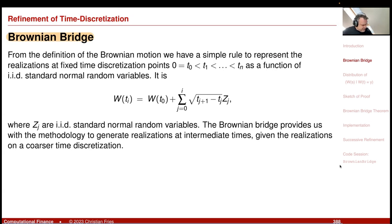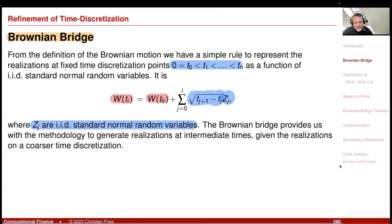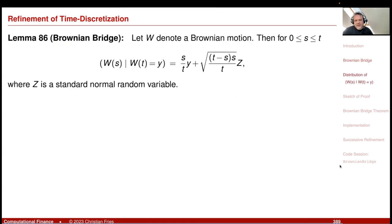I assume we have a coarse time discretization T0 to Tn. We can easily generate our Brownian motion starting at T0, where W(T0) = 0, with independent increments. These independent increments are normally distributed random variables with mean 0 and standard deviation equal to the square root of the time step size of the coarse time discretization.